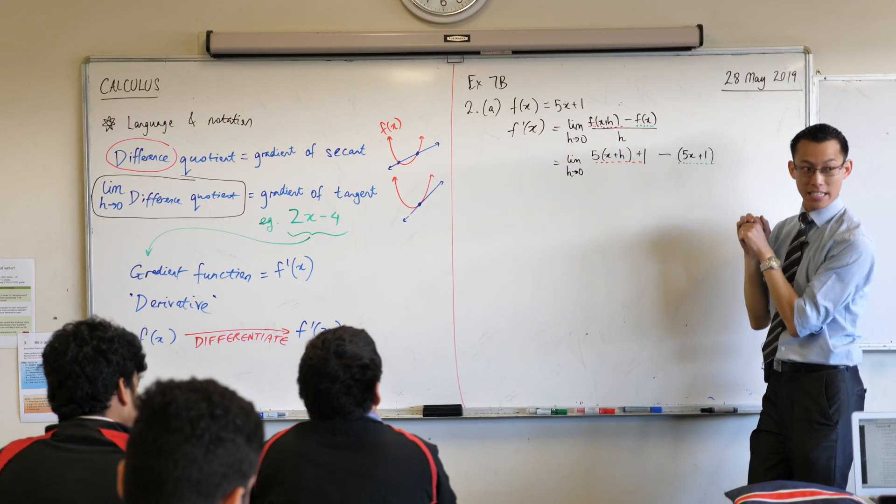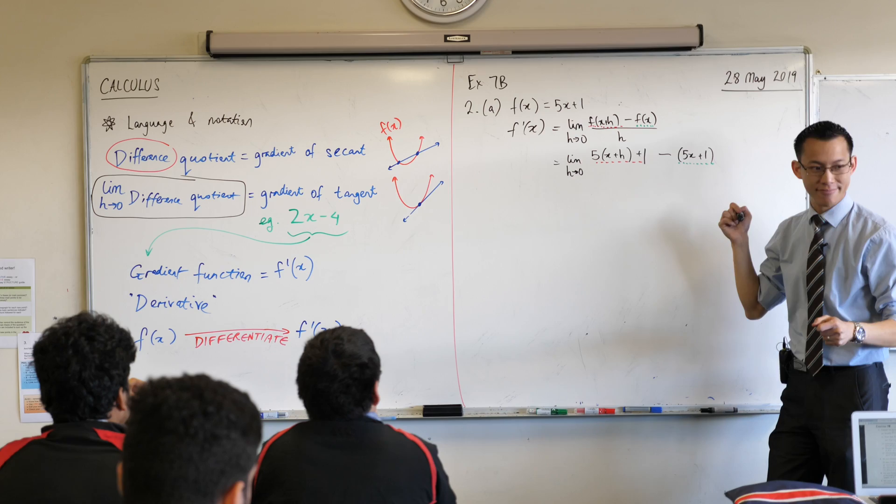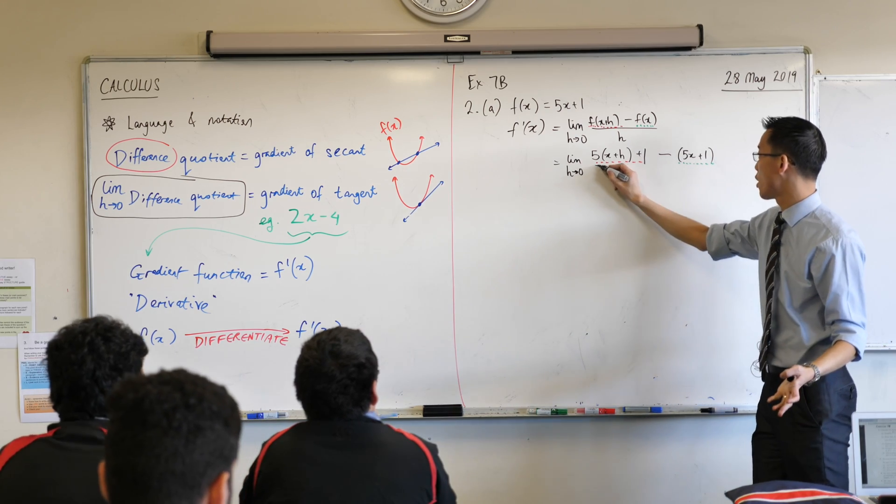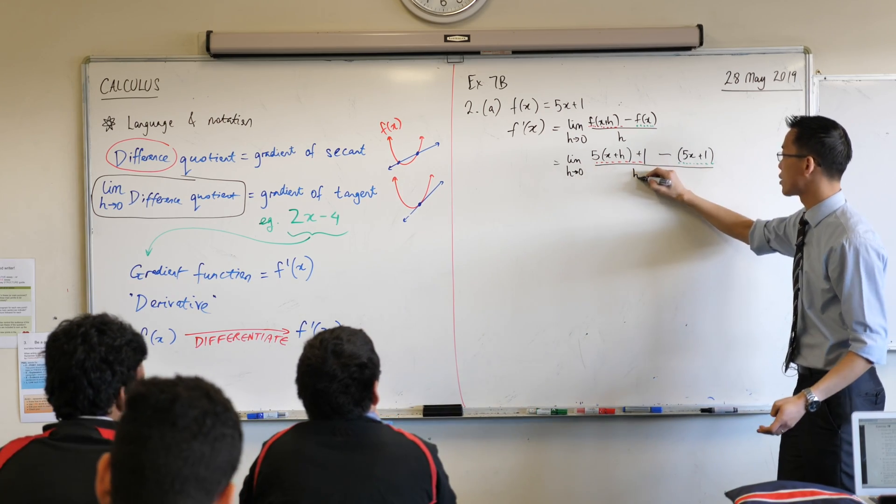That's the numerator. What's left in my difference quotient? The denominator, which is over h. Very good.